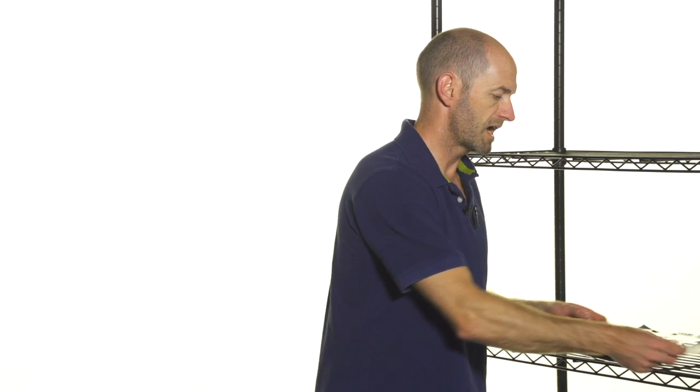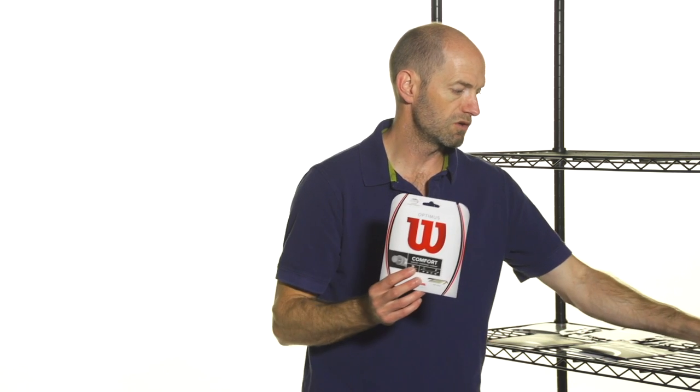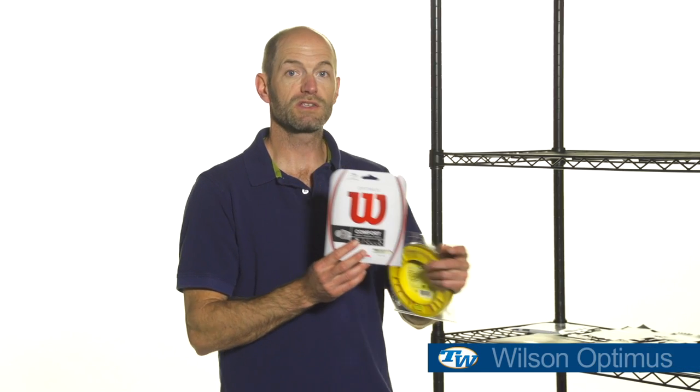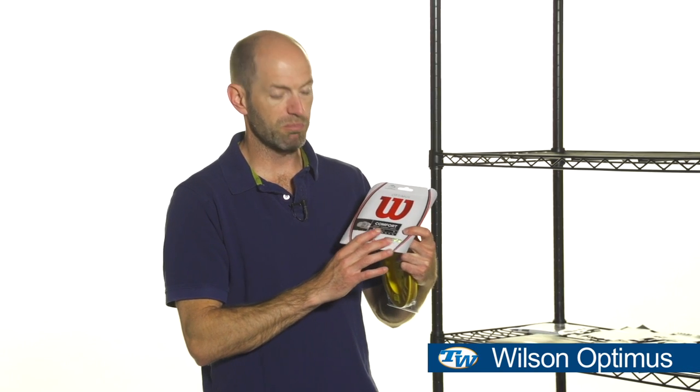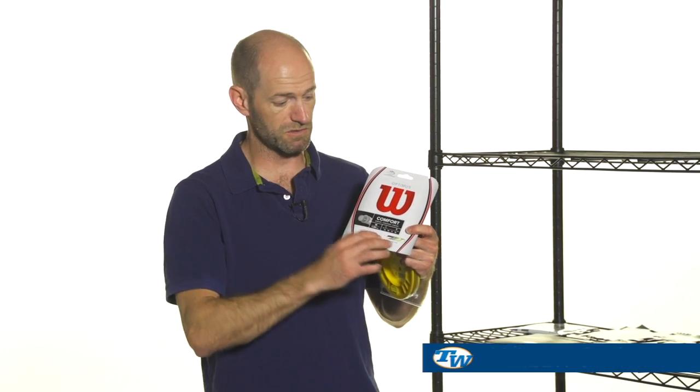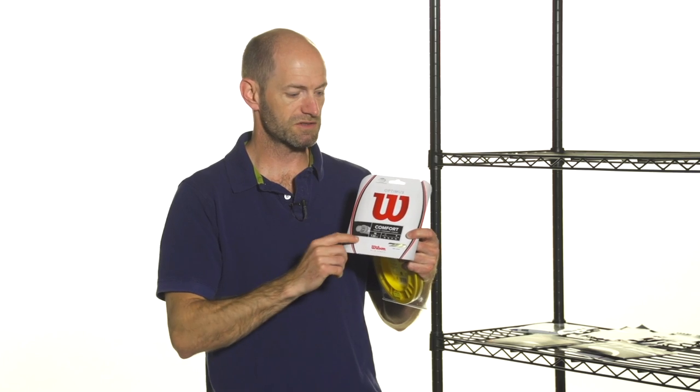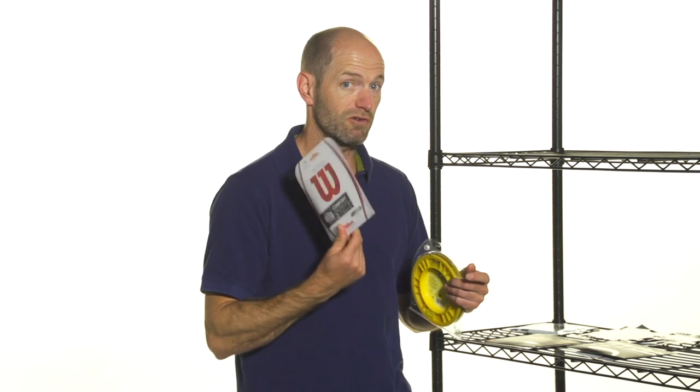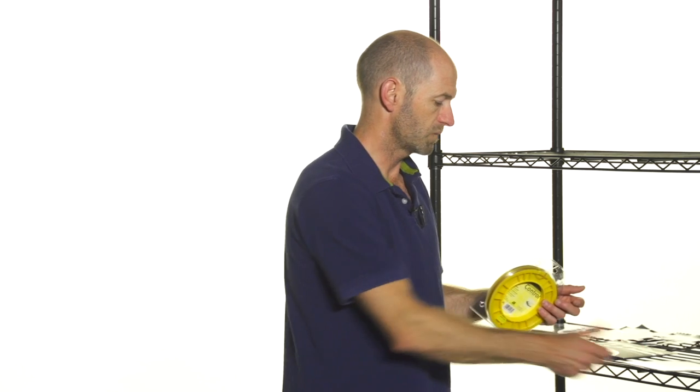A couple more multis now. We have another one from Wilson and this is a new one from them—it's called Optimus—and it's a really fun string. It has a pearlescent coating on it, so as the racket moves in the light it reflects different colors and you get that pearlescence to the string. So it's a fun way to add a little bit of sparkle to your string job and also get great comfort and playability as well.